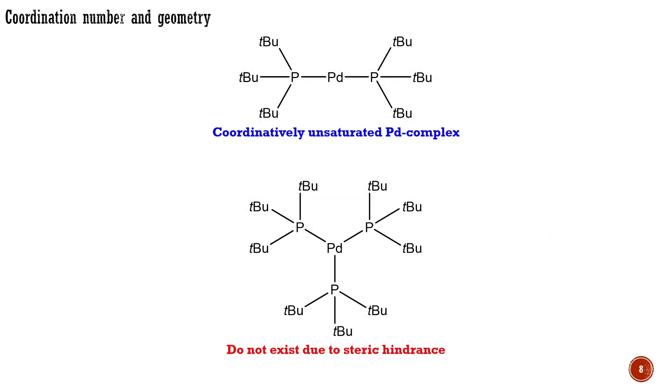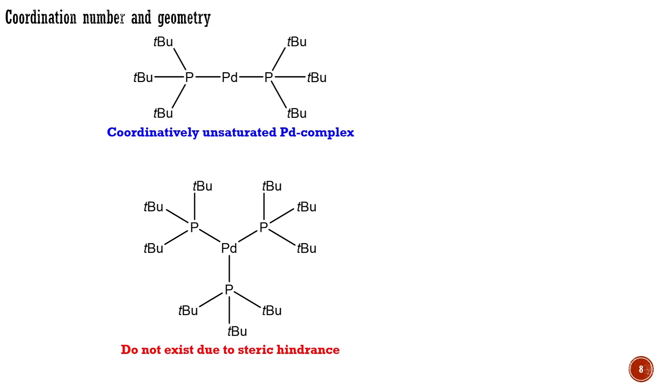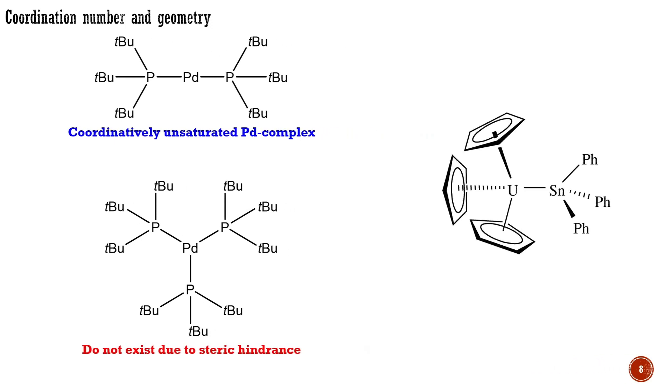Coordination numbers lower than 4 are found with bulky ligands that cannot bind in greater numbers without prohibitive steric interference. For example, palladium-0 can coordinate only 2 tri-tert-butylphosphine ligands and related 3-coordinated complexes do not exist due to unbearable steric hindrance. The f-block metals do not have such electronic limitations and are limited only by sterics, which means that coordination number values up to 15 are reasonable for them.